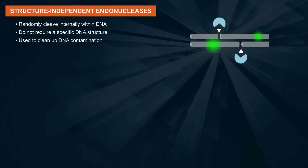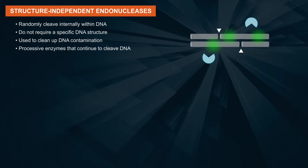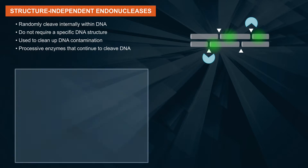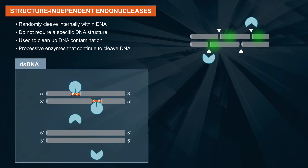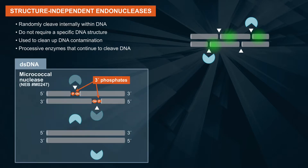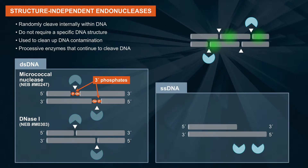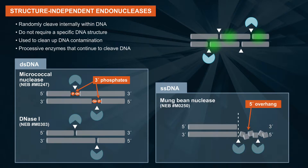Structure-independent endonucleases are primarily used to clean up DNA contamination. These are processive enzymes, and once activity has been initiated, the endonuclease will continue to cleave DNA. Examples active on double-stranded DNA are micrococcal nuclease and DNase I. An example active on single-stranded DNA is mung bean nuclease.